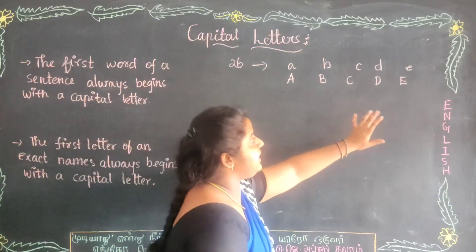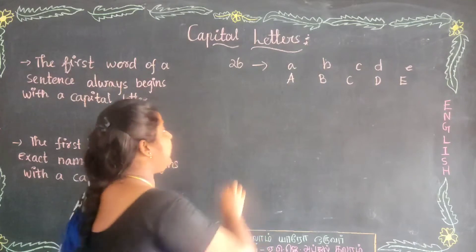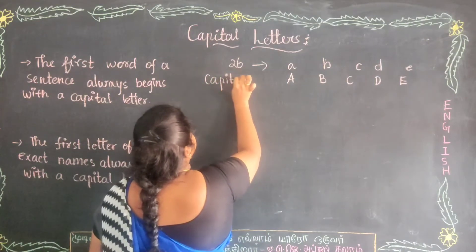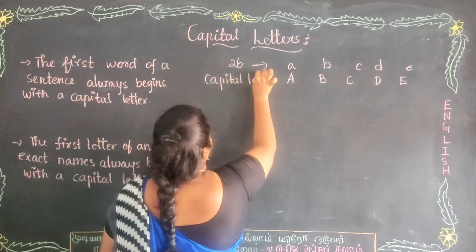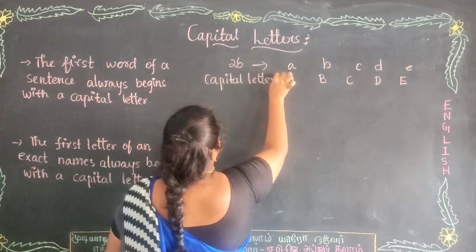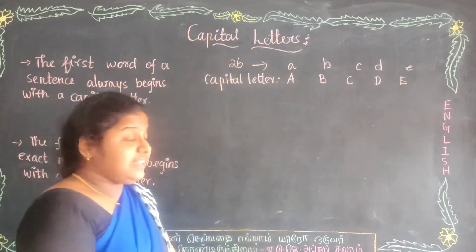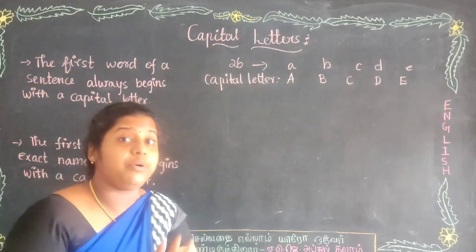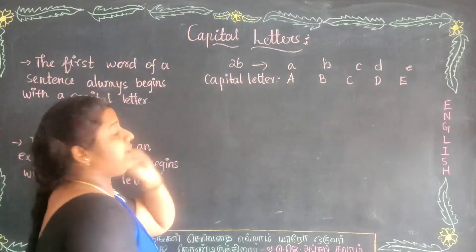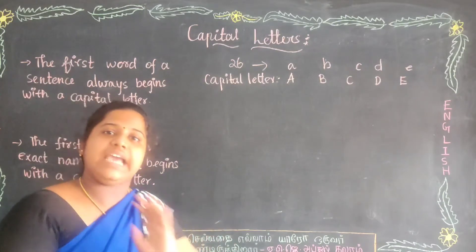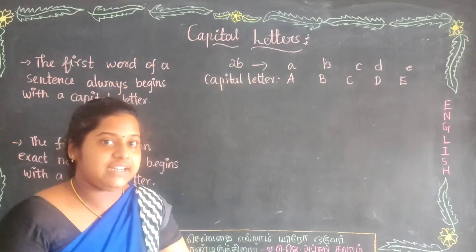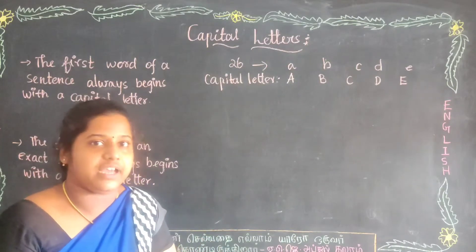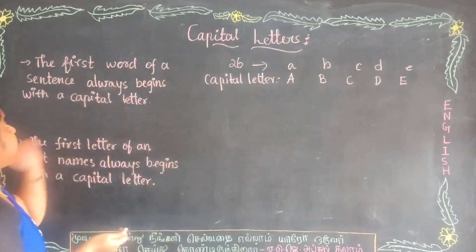A, B, C, D, E — these are all capital letters. So you know that this is a small letter and this is a capital letter. Now we are going to learn about when to use capital letters. Uses of capital letters. Let's start with the first point.